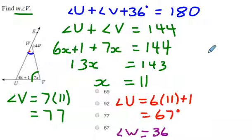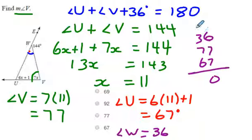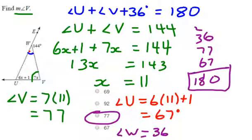And we know that this angle w equals 36 because it is supplementary to 144. If we add those angles together 36, 77, and 67, we better get 180. And we do. So the answer to this question, because it was asking about the measure of angle V, is 77.